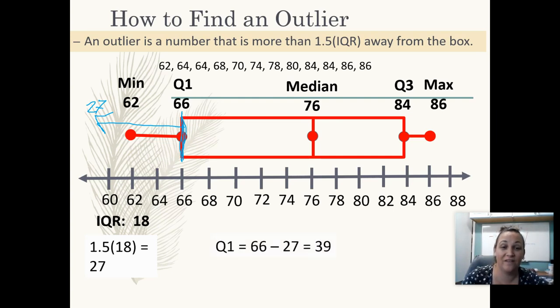So again, if any number is 39 or smaller, that is an outlier—more than, smaller than 39. Now we don't have any low outliers on this one because my smallest number is 62, so we're good.